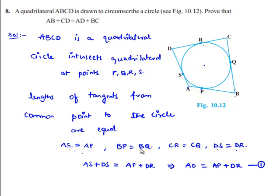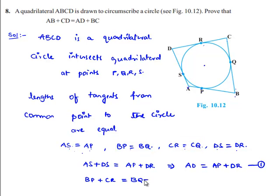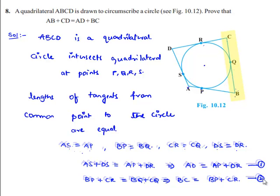Let us also add the second and third equations. Then we get BP plus CR equals BQ plus CQ. On the right-hand side, BQ plus CQ equals BC. Therefore BC equals BP plus CR. Let this be equation number 2.